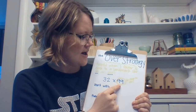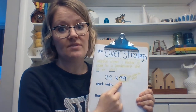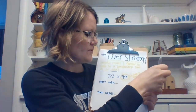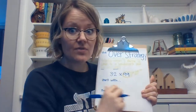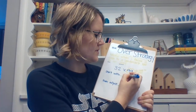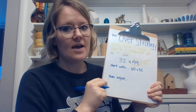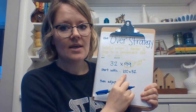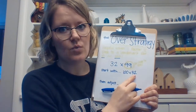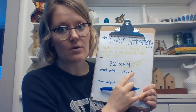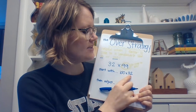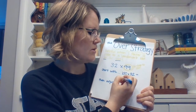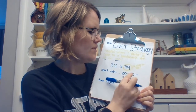I'm thinking about this as groups of a number — 99 groups of 32. Instead of starting with 99 groups of 32, I'm going to start with 100 groups of 32, which is 100 times 32. When we multiply by a power of 10, the digits shift over one, two, or three place values depending on the power of 10. Since we're multiplying by 100, it shifts over two place values, so 32 times 100 equals 3200.